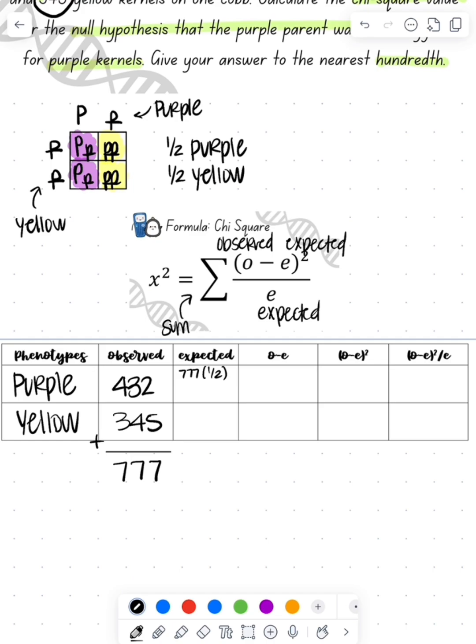We're going to use that total multiplied by the probabilities that we expected. So I expect there to be 388.5 of each of these different phenotypes.